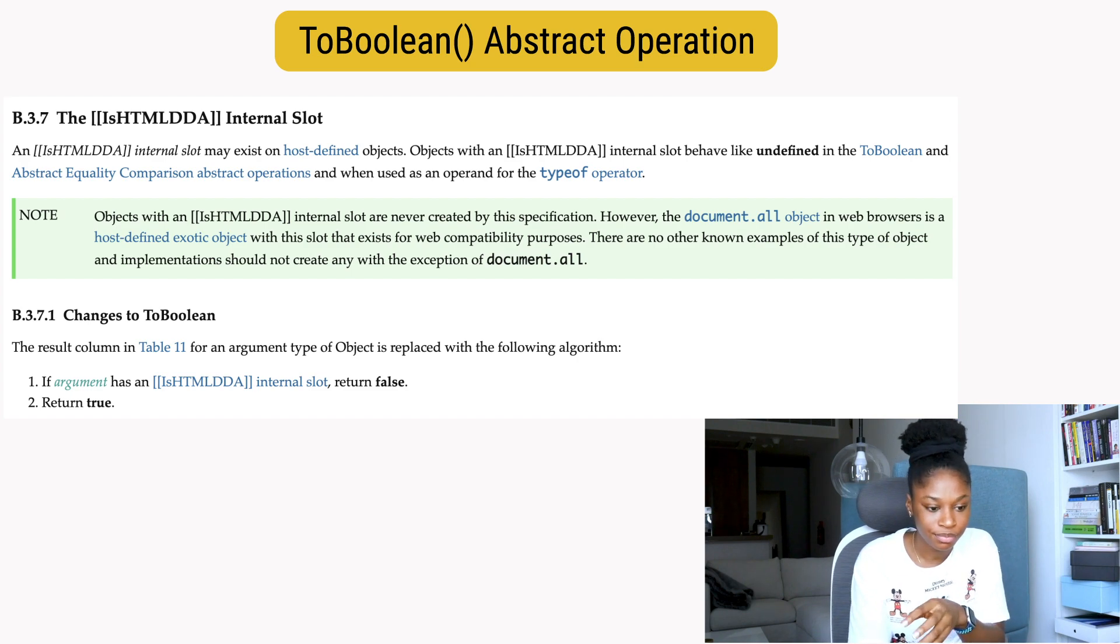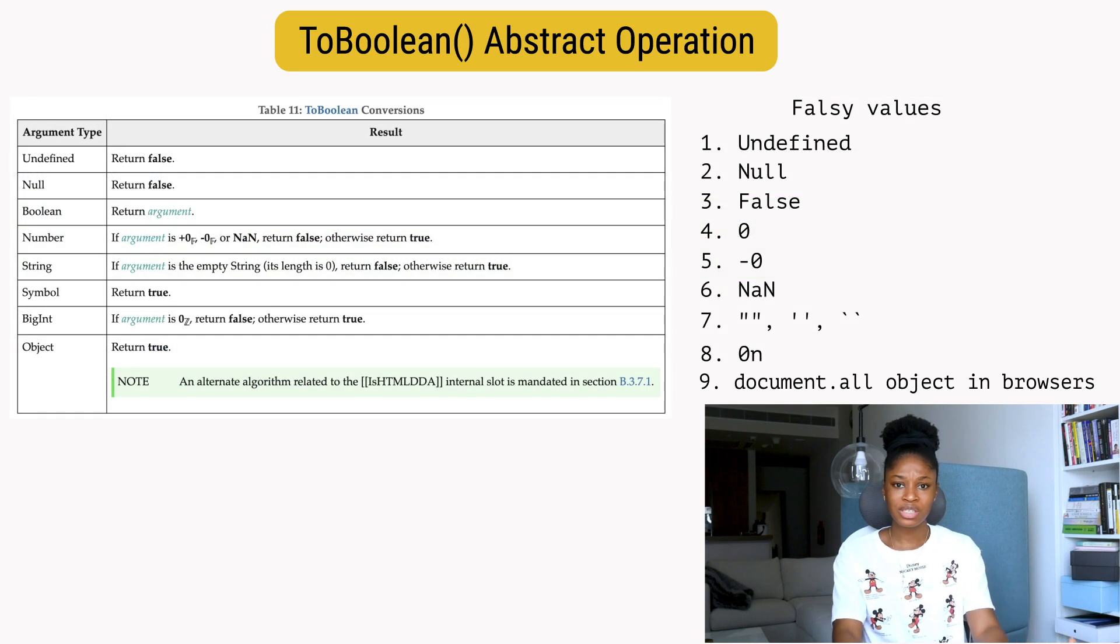Let's see how the spec says objects with this internal slot should behave when coerced to boolean. It says if the argument has this internal slot, return false. The spec says that objects with this internal slot behave like undefined, and undefined when coerced to a boolean returns false, so that's understandable.